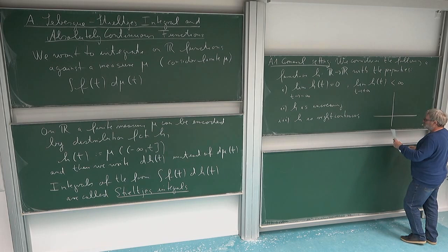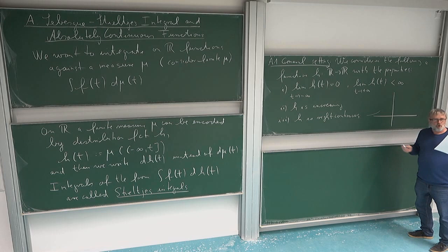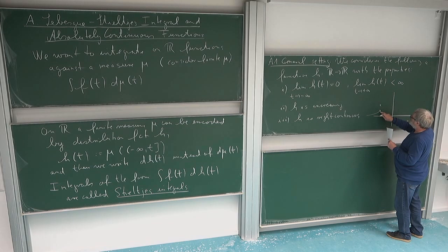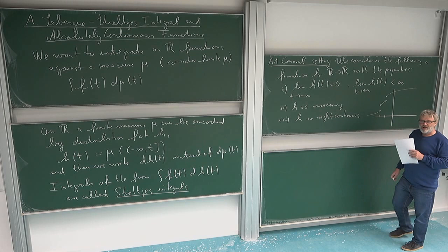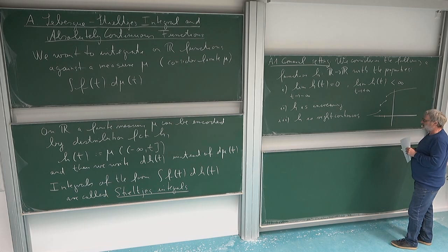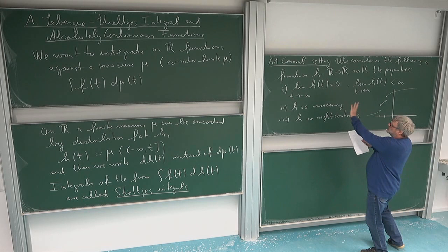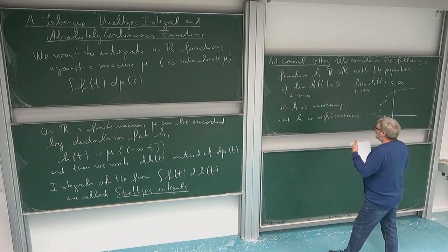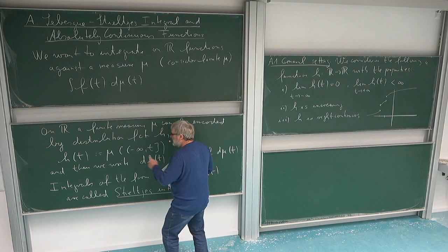So a function H of this class looks essentially like this: for minus infinity it goes to zero, it is increasing, and at some points it might have jumps. At the point of the jump, the value is taken on the right side. It increases further, then there might be another jump at some other place, and so on. At infinity it converges to some finite number. The number of jumps can be infinite but must be countable. So this is the class of functions we are looking at, and they are exactly the functions which are given by measures — I can encode finite Borel measures on R in a one-to-one way by such distribution functions.